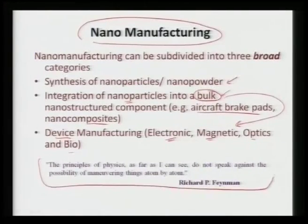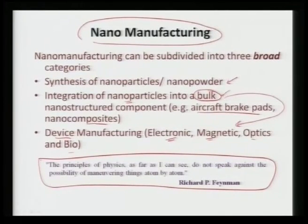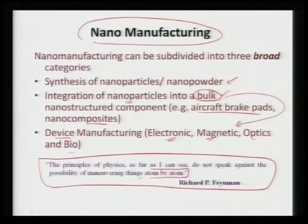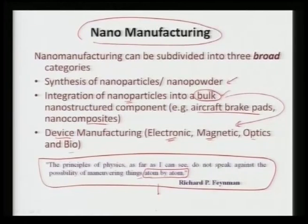As Richard Feynman has said, the principles of physics do not speak against the possibility of maneuvering things atom by atom. So if we can manipulate atom by atom, we can definitely achieve what we call nano materials — achieving any functionality by somehow manipulating atoms on an individual scale and then making them into certain devices or components.